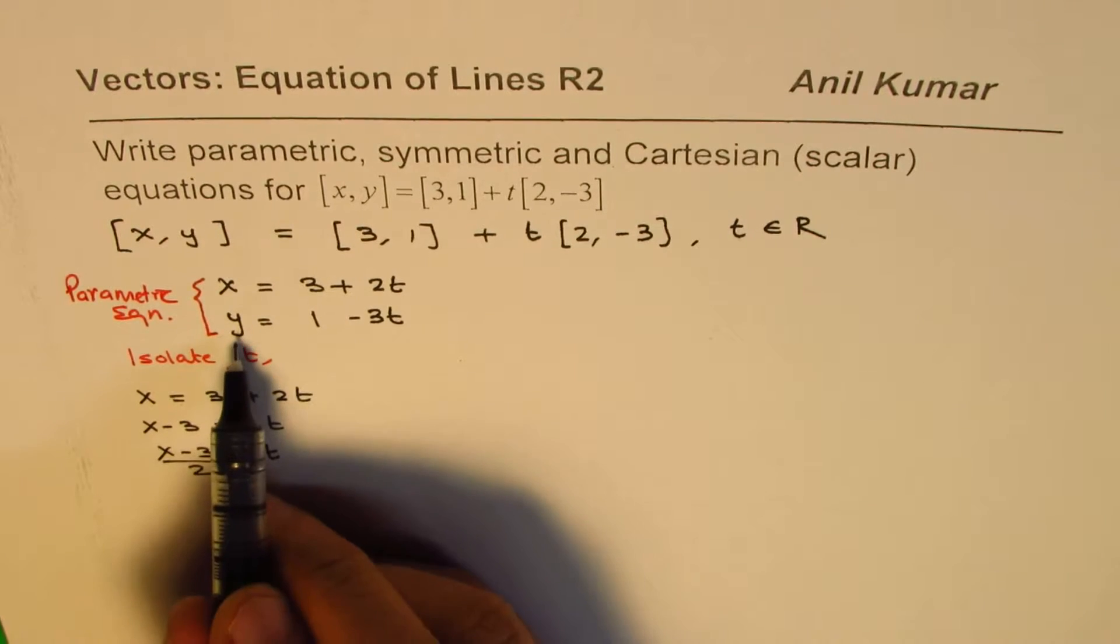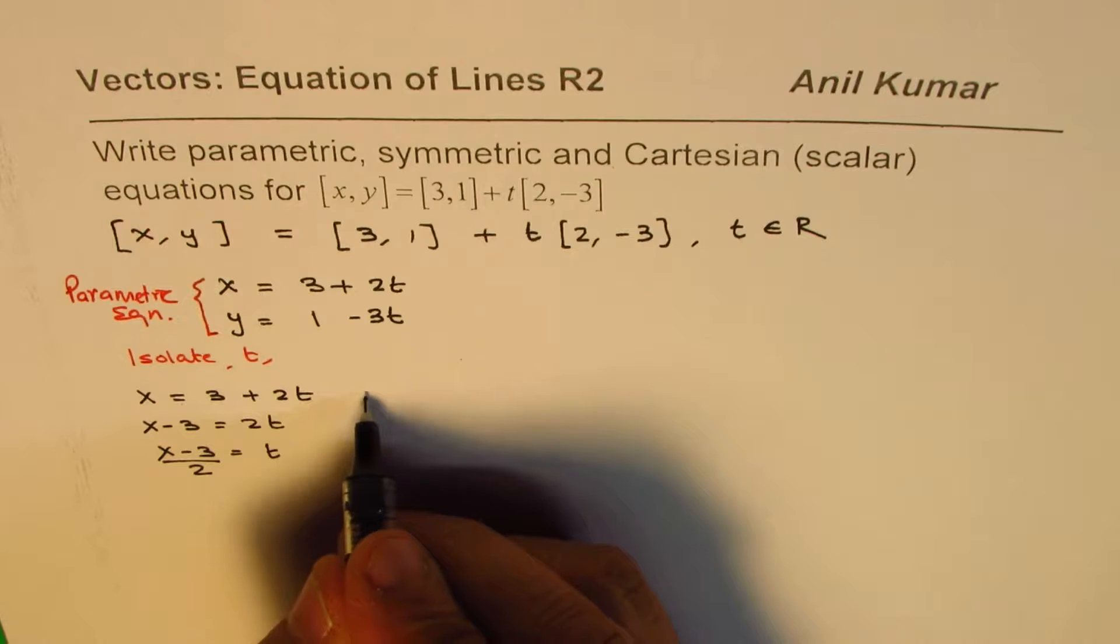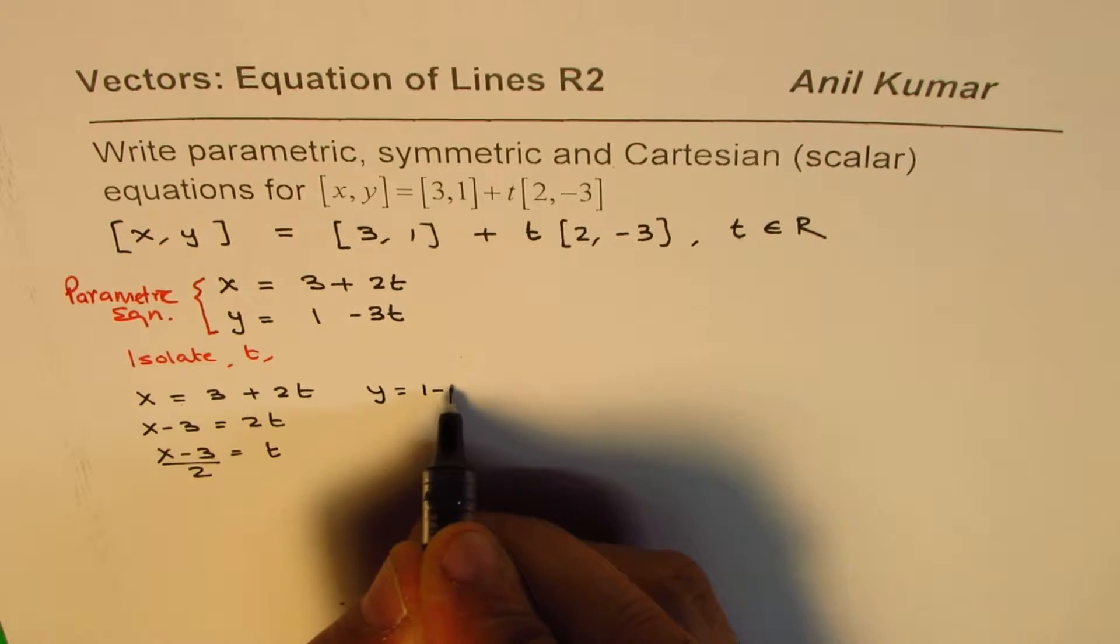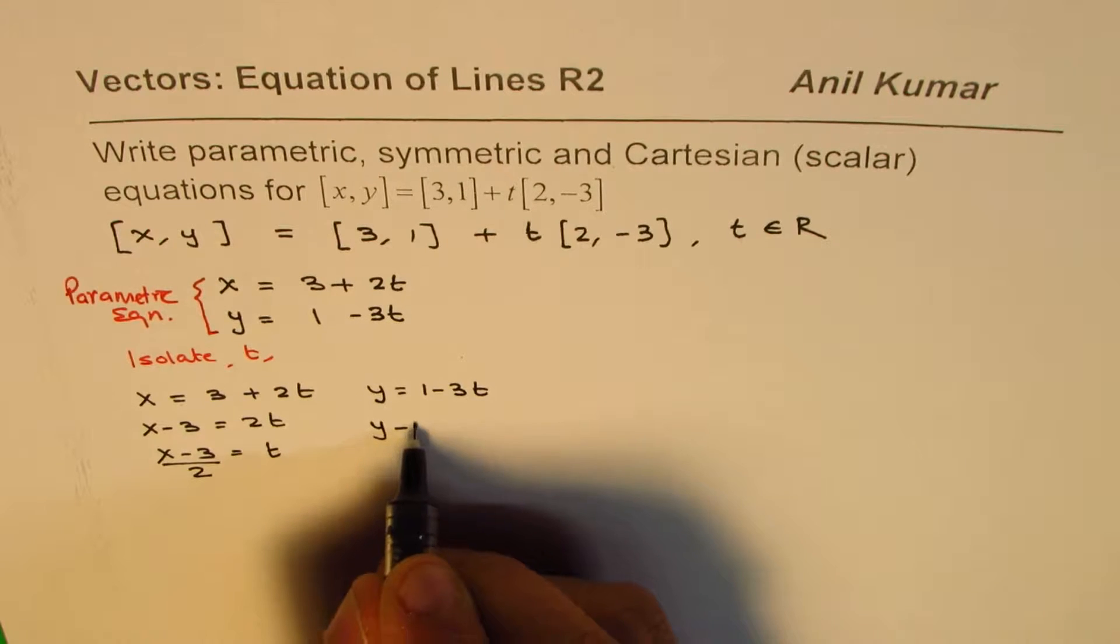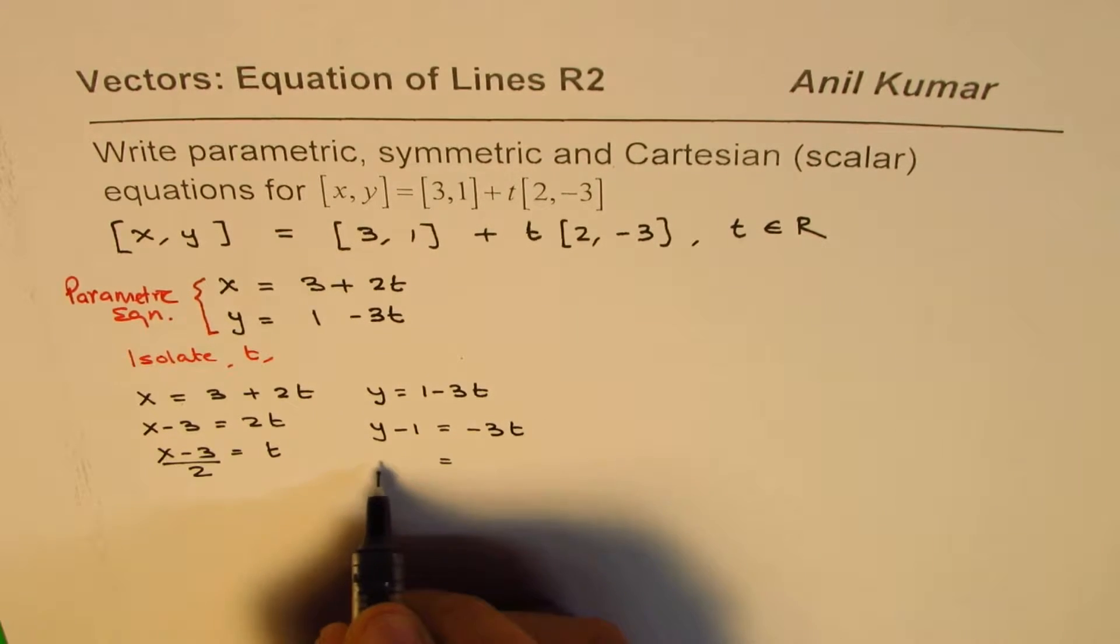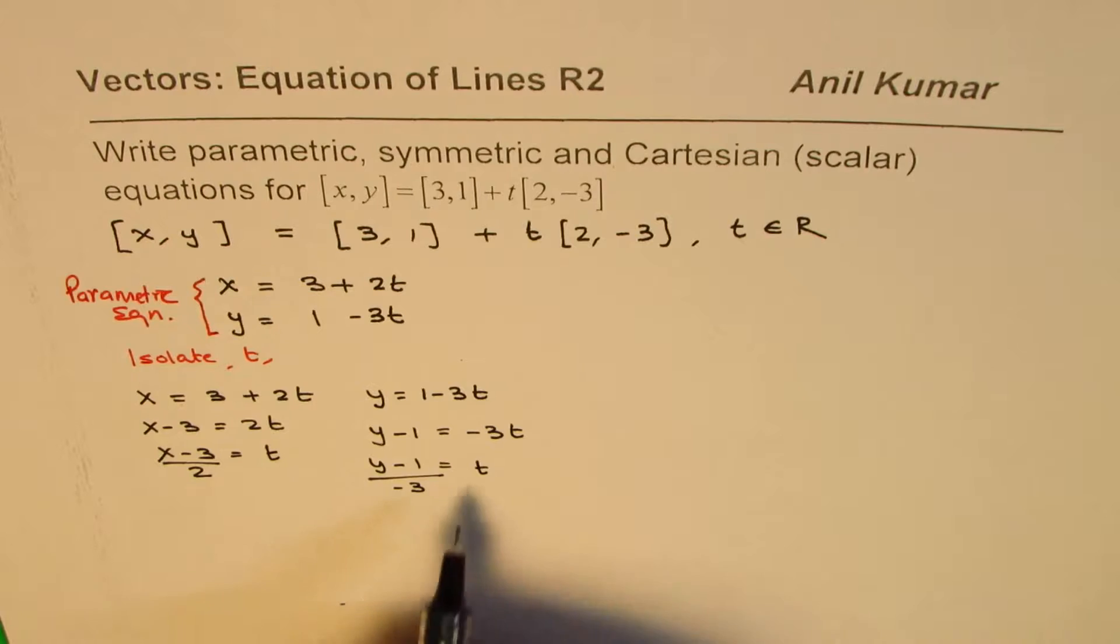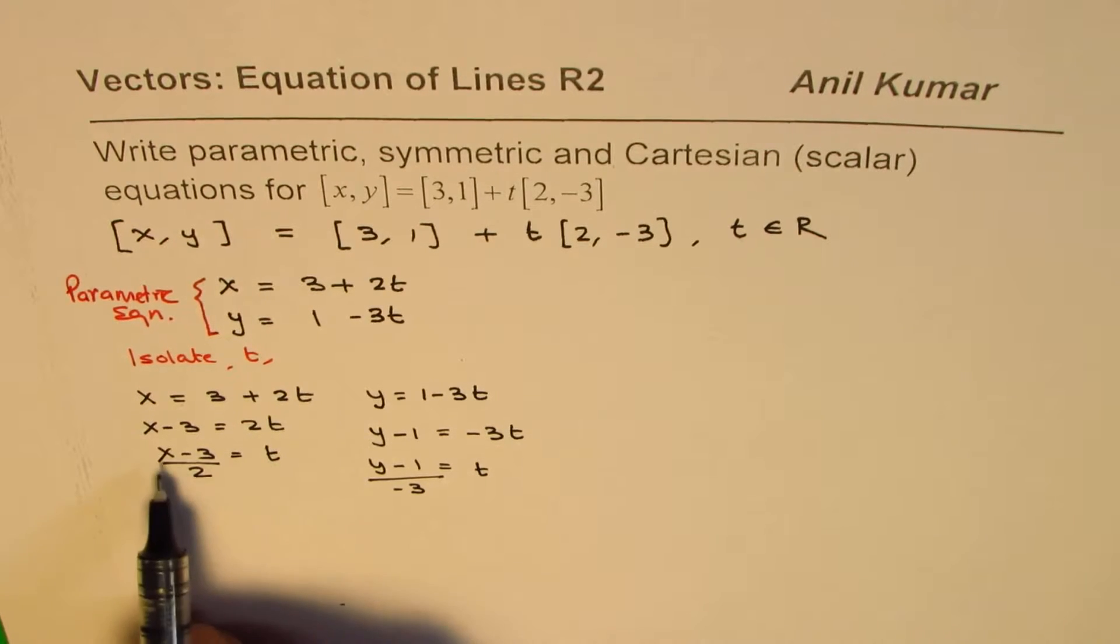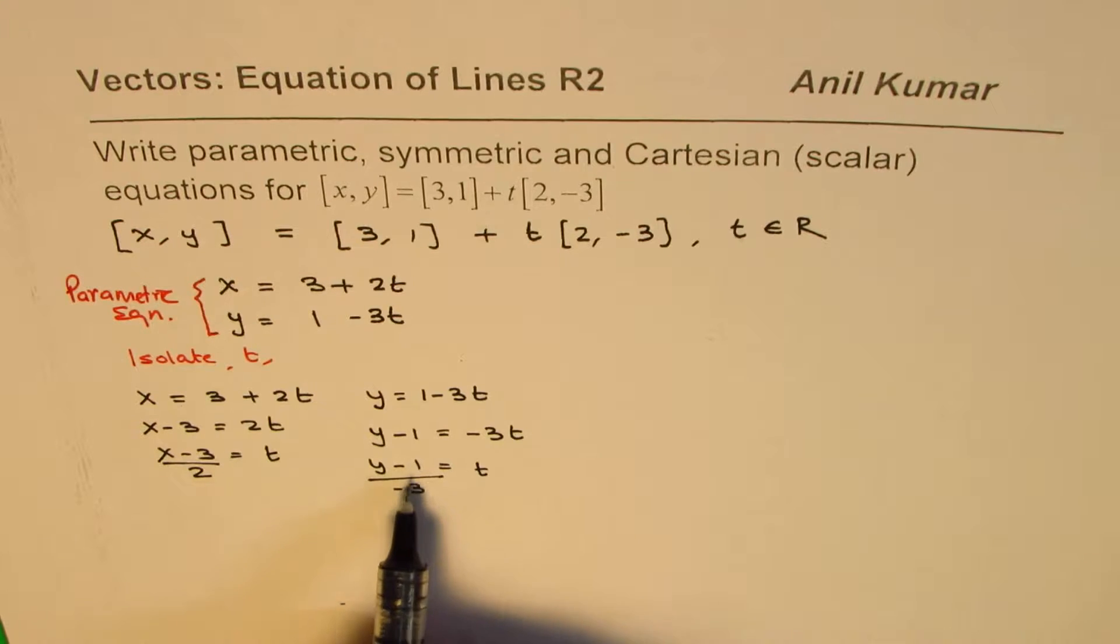Similarly, we can isolate y. To isolate y, we know it is y equals to 1 minus 3t. We can write this as y minus 1 equals to minus 3t, or (y - 1) divided by minus 3 is t. Now both these equations, (x - 3)/2 is equal to t and (y - 1)/(-3) is also equals to t.